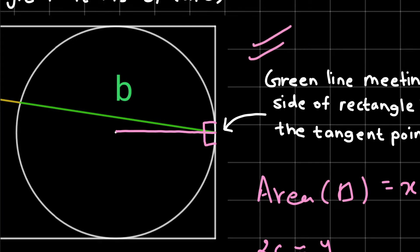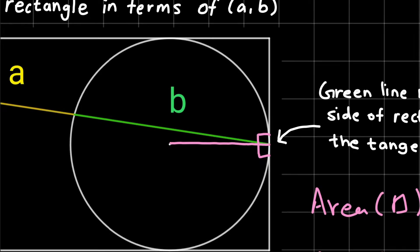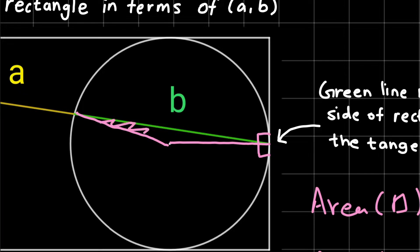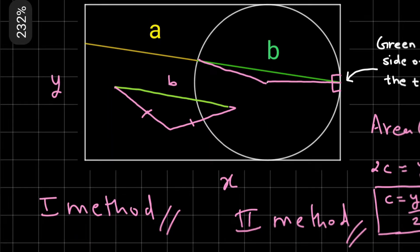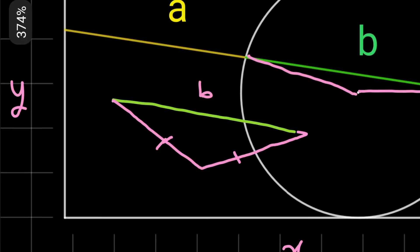Now I draw one more radius, this time ending at the point where the line segment is divided into parts A and B. This gives us a triangle. I redraw it larger for clarity. The side opposite the center has length B, and the two sides from the center are both radii of length Y/2. I mark the base angle as alpha; since the triangle is isosceles, both base angles equal alpha.